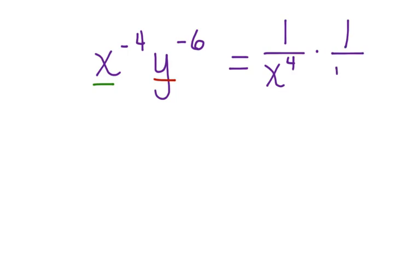which becomes 1 over y to the 6th. And we can rewrite that as 1 over x to the 4th times y to the 6th.